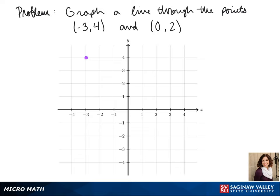Then for 0, 2, we don't have to move at all on the x-axis and we just go up 2 on the y. To make our line, we connect our two points.